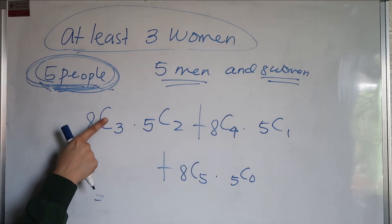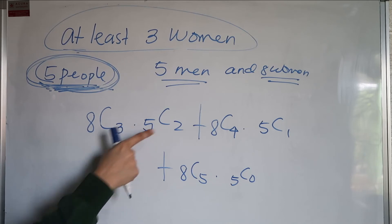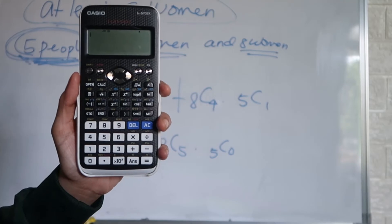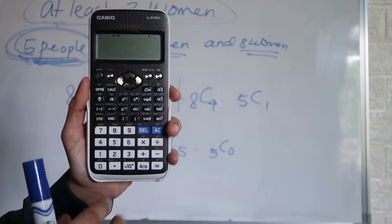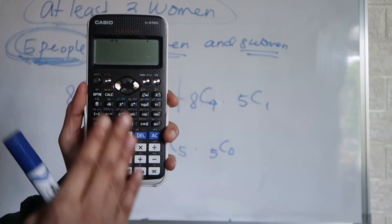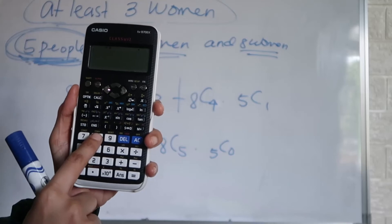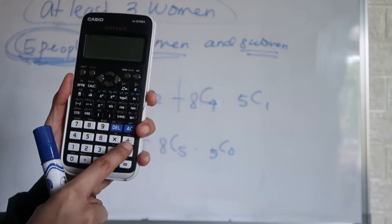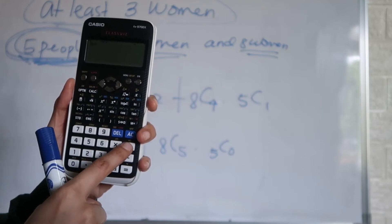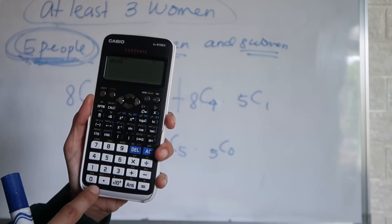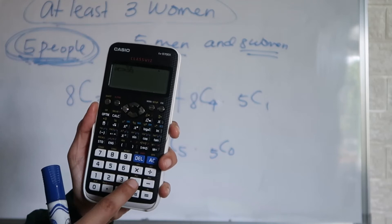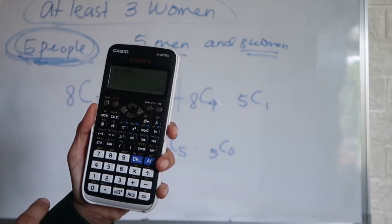So the combination of C(8,3) multiplied by C(5,2): using the calculator, press 8, shift, then the combination symbol, then 3, times, then 5, shift, combination symbol, then 2, and press equals. You get 560.